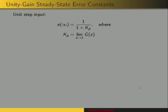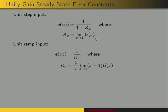We end up with error constants. We have Kp for the unit step input, and the steady state error with a step input is one over the sum of 1 and Kp, where Kp is given by the limit as Z approaches 1 of G of Z. Similarly for the ramp input, we have a steady state error constant Kv, and the steady state error is one over Kv. Kv is defined as one over the sampling period times the limit as Z approaches 1 of Z minus 1 times G of Z.